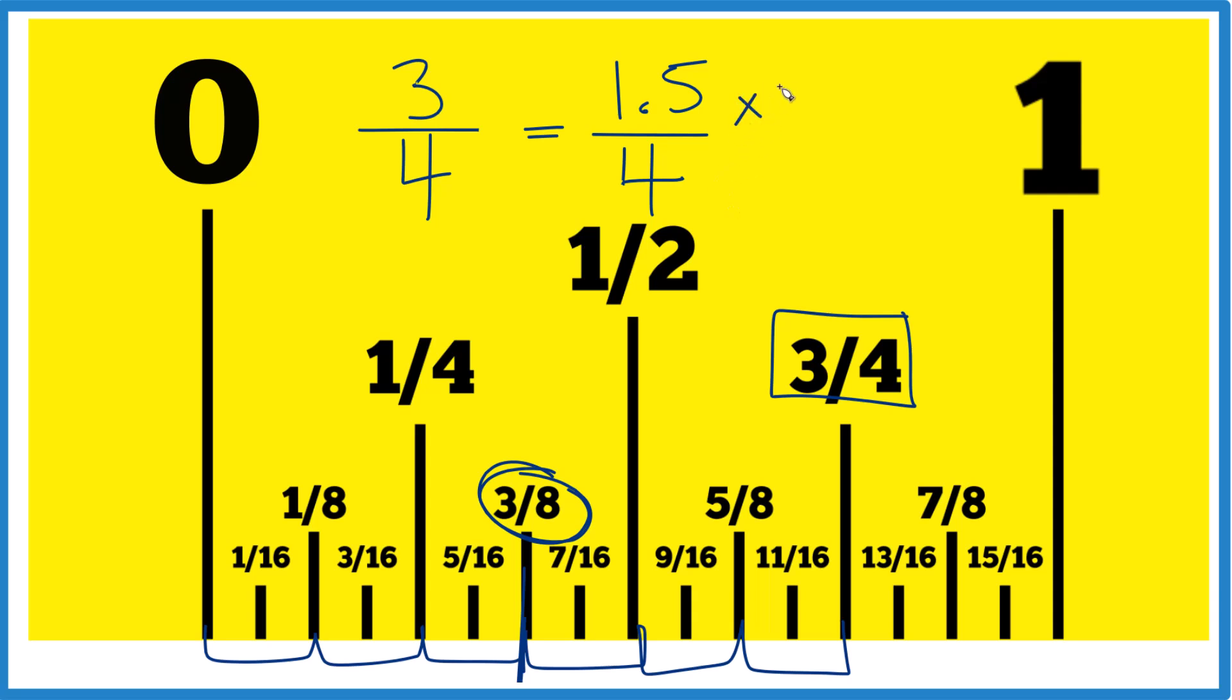Why don't we multiply the numerator by two and the denominator by two? Because two divided by two is one. So we're not changing the value, just the way it's represented. 1.5 times two equals three. Four times two equals eight. And again, we get three-eighths, which is what we found before.